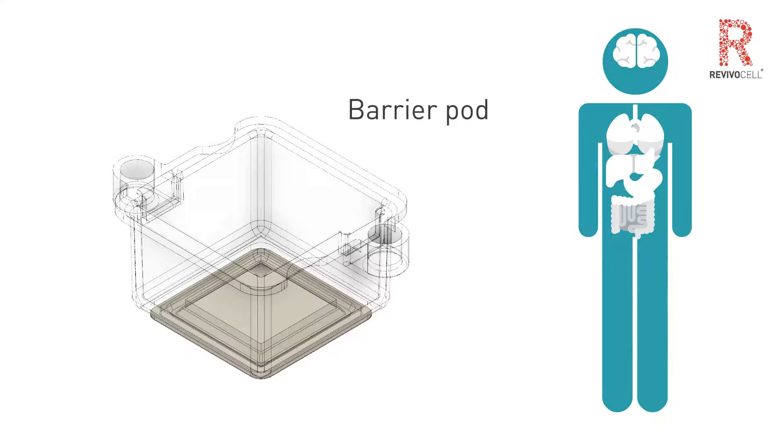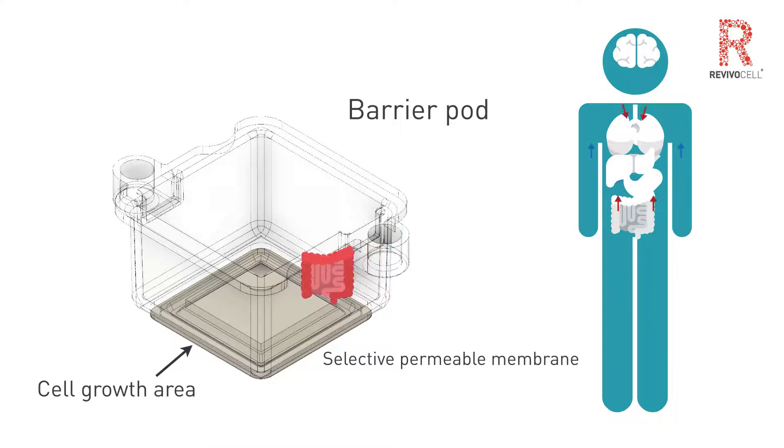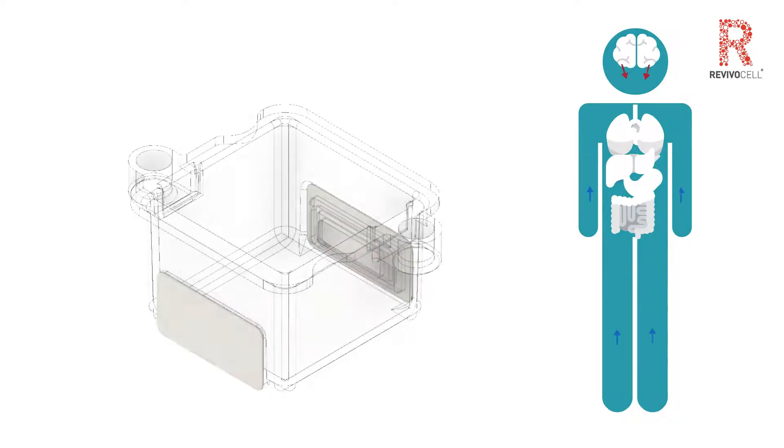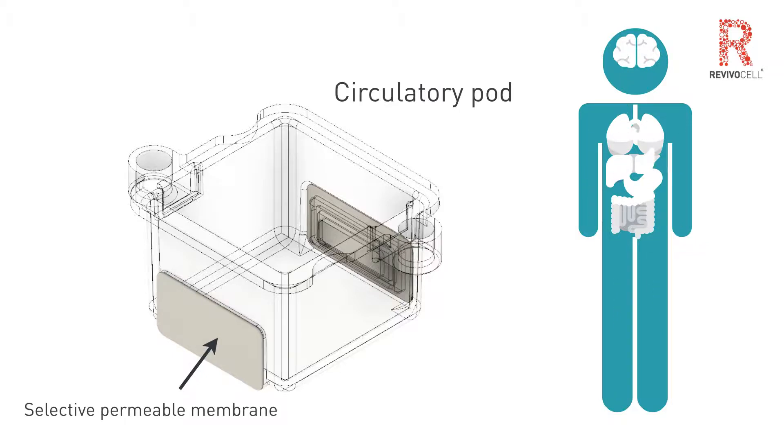Cells can be grown in barrier pods to simulate biological barriers such as the intestinal epithelial layer or the blood-brain barrier, or in circulatory pods for the growth of different cell types in systematic circulation.